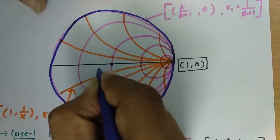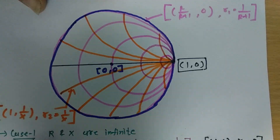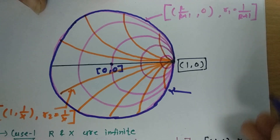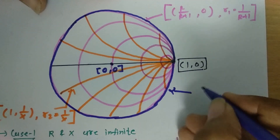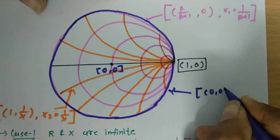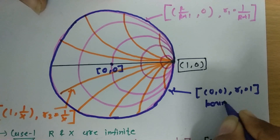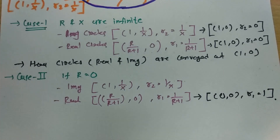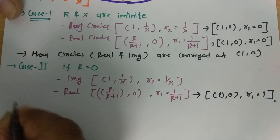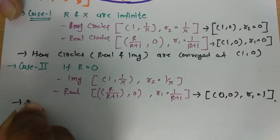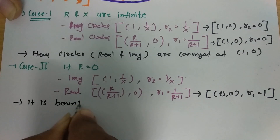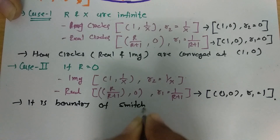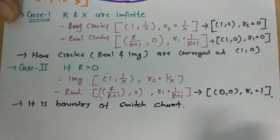This outermost circle, centered at (0, 0) with radius 1, is the boundary of the Smith chart. When R = 0, the real circle equation produces this boundary circle, which is the most outward circle of the Smith chart.